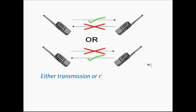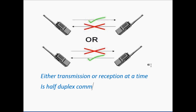Either transmission or reception at a time is half duplex. If the transmission is finished by the transmitter, then they are able to receive data. At an instant of time they cannot transmit and receive both. If receiving is finished, then they are able to transmit.